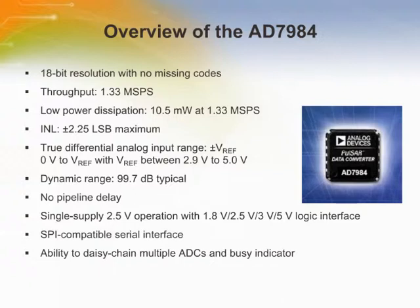The AD7984 is an 18-bit successive approximation analog-to-digital converter that operates from a single power supply, VDD. It contains a low-power, high-speed, 18-bit sampling ADC and a versatile serial interface port. On the CNV rising edge, the AD7984 samples the voltage between the IN plus and IN minus pins. The voltage on these pins usually swings in opposite phases between 0 volts and VREF. The reference voltage, REF, is applied externally and can be set independently of the supply voltage, VDD.